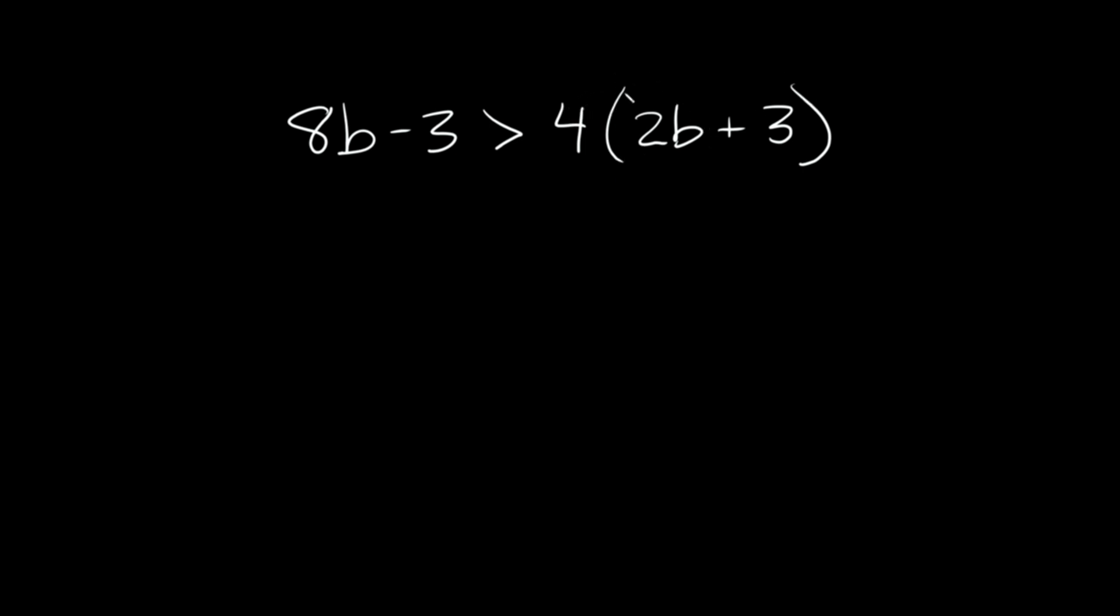Because if you see something, if I divide both sides by 4, well, 4 doesn't divide evenly into 3. It divides evenly into 8, but not 3, so I don't want to have to deal with fractions if I don't have to. So let's distribute. That'll be easy. So on this side, 4 times 2b, that's going to be equal to 8b. And then 4 times 3 is equal to positive 12. Then our symbol right here stays the same, and then here we have 8b minus 3.